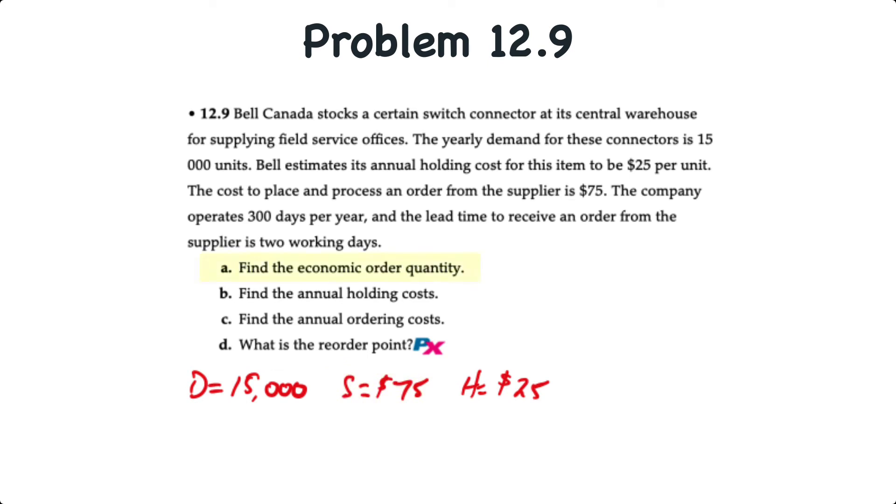We have four requirements. The first is to determine the economic order quantity, or EOQ, then determine the annual holding cost. The third requirement is the annual ordering cost, and the fourth requirement is to determine the reorder point.